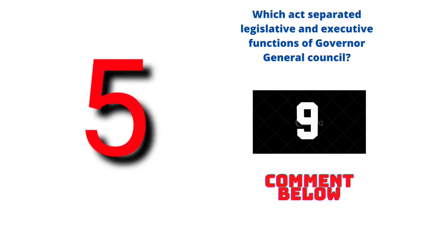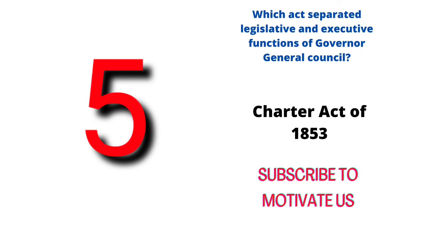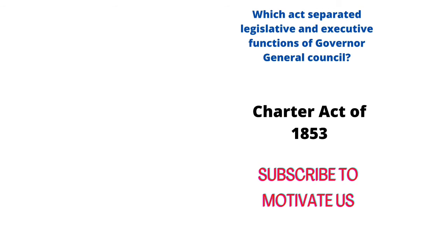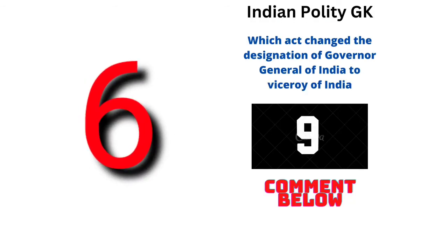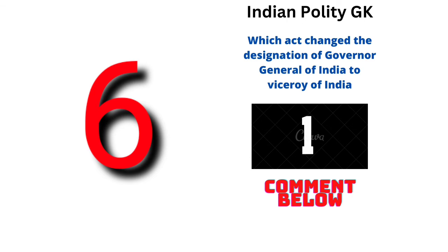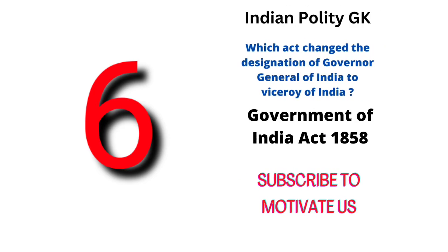The question is: which act separated the legislative and executive functions of the Governor General's Council? The answer is the Charter Act of 1853. The next question is: which act changed the designation of Governor General of India to Viceroy of India? The answer is the Government of India Act 1858.